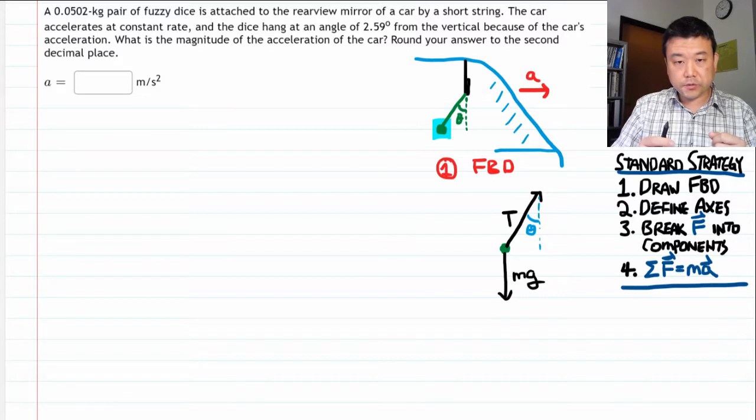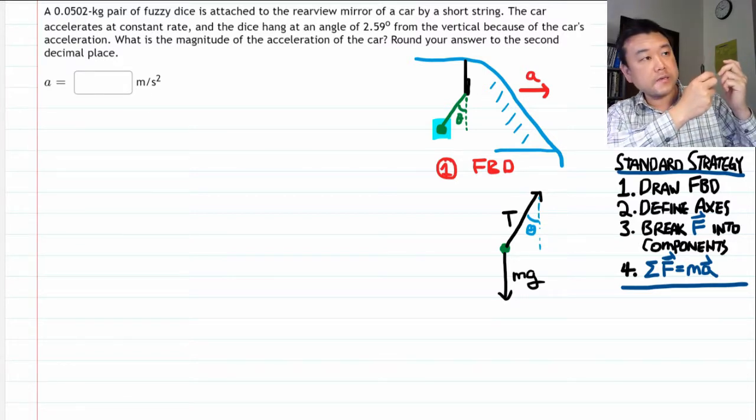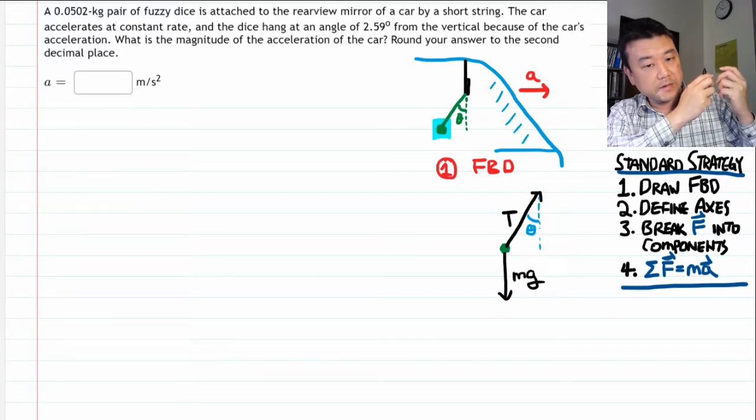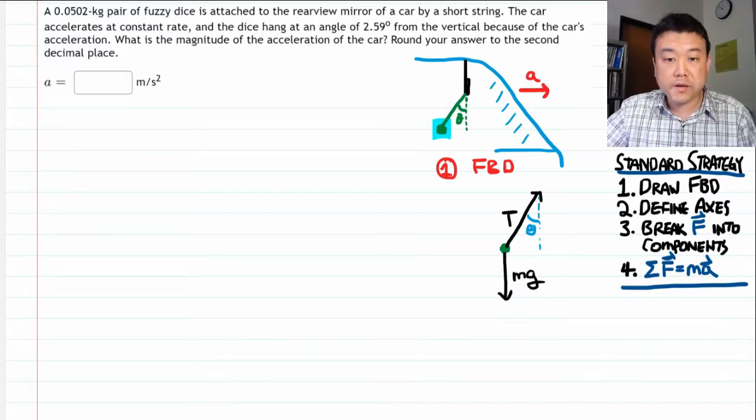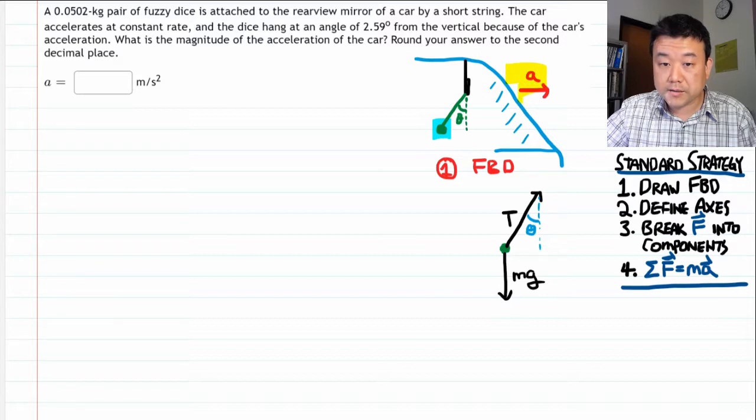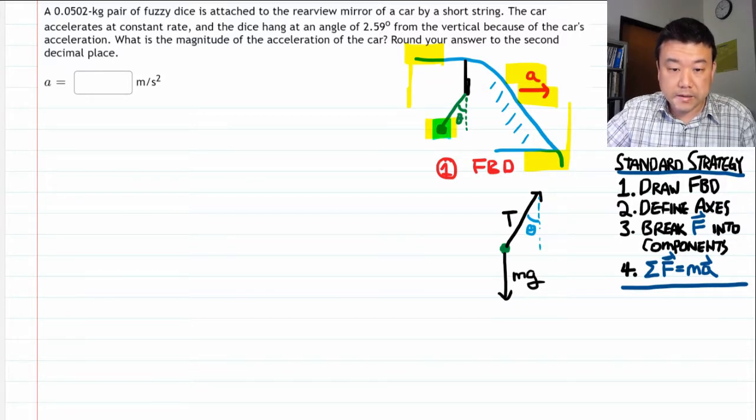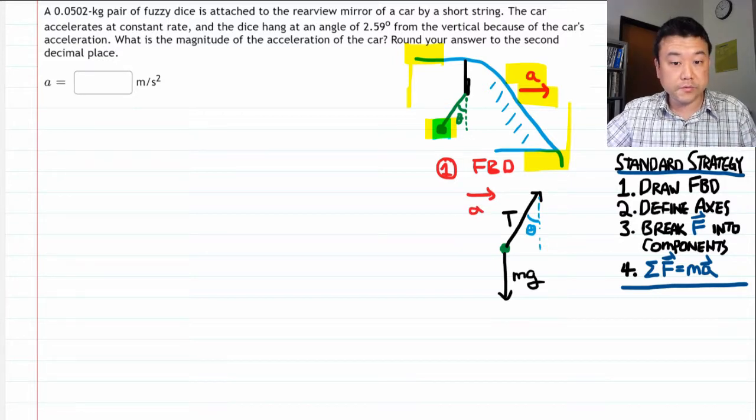From your perspective in the car, it's easy for you to look at the dice and think of it as being at rest, not accelerating. But as you think through this situation, what you have to realize is that everything in this picture is accelerating with the same acceleration as the car. So the dice is accelerating. It is accelerating to the right with the acceleration a.